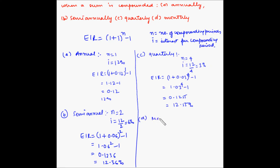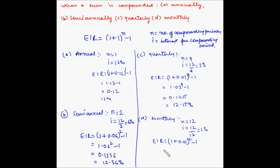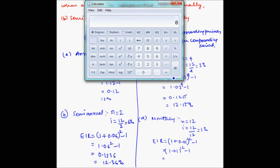For monthly compounding, n = 12 and i = 12 ÷ 12 = 1%. So the effective interest rate equals (1 + 0.01)^12 − 1 = 1.01 to the power 12 − 1 = 0.1268, which is 12.68%.